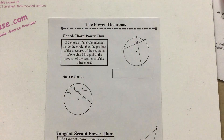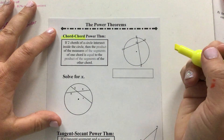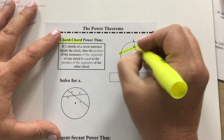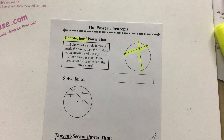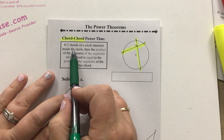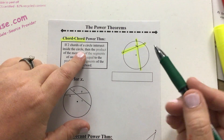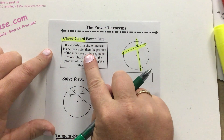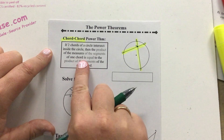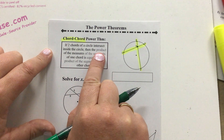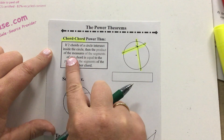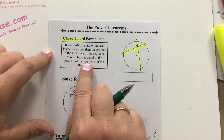The first one is called the chord-chord power theorem. If you look at the picture to the right, you see two chords — hence the chord-chord power theorem. It says if two chords of a circle intersect inside the circle, then the product — and product means we multiply — of the measures of the segments of one chord is equal to the product of the segments of the other chord.